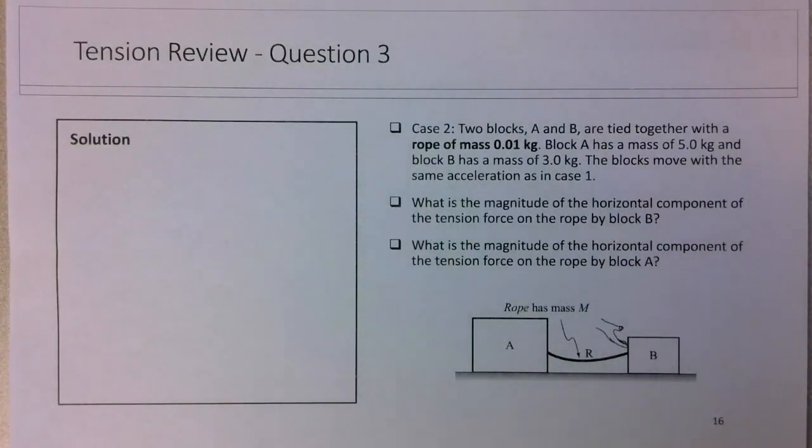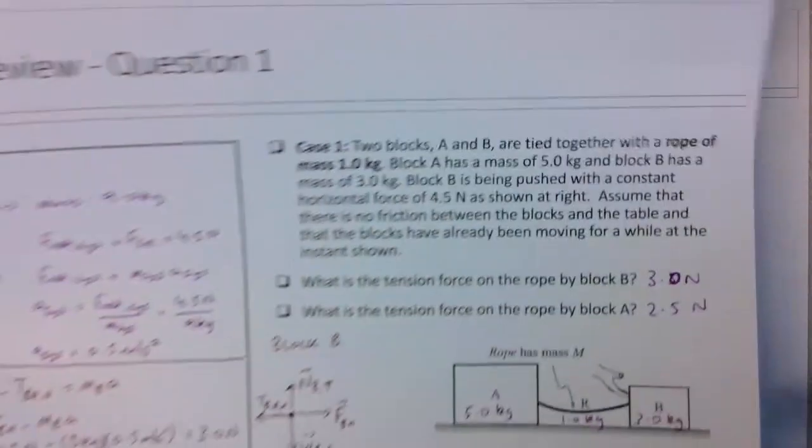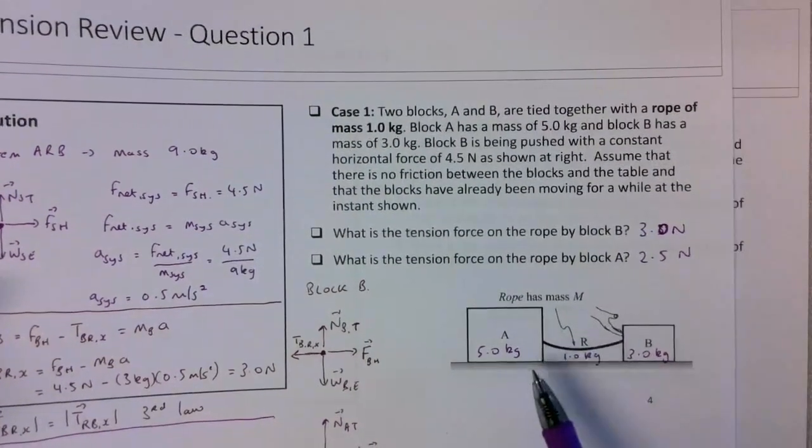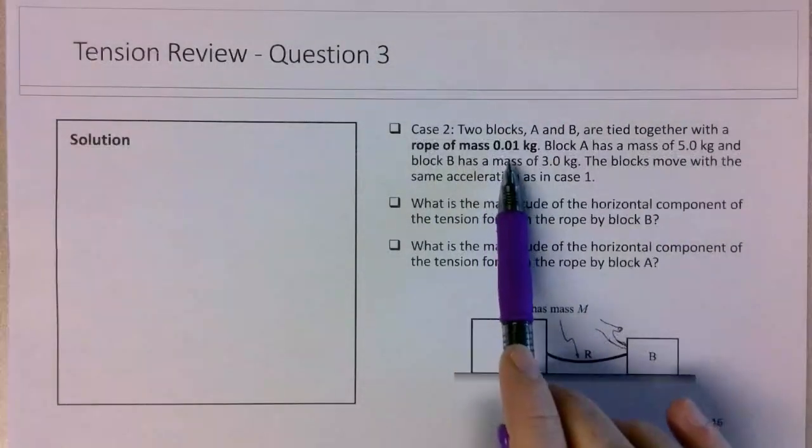Okay, so in this last tension review question, part of this three-part series, we're now trying to figure out the tension forces exerted on the rope by the blocks when the rope mass has been reduced to 0.01 kg. We're working from case 1 where the mass was 1 kg, quite a heavy rope, to a much lighter rope of 0.01 kg.